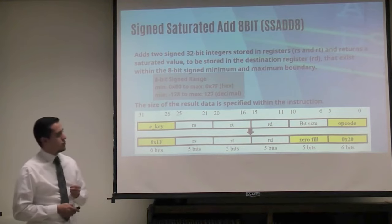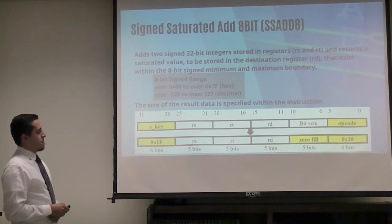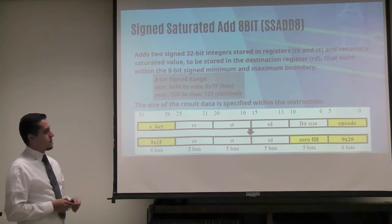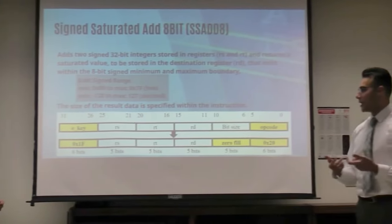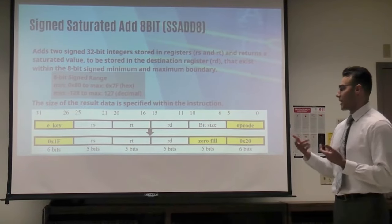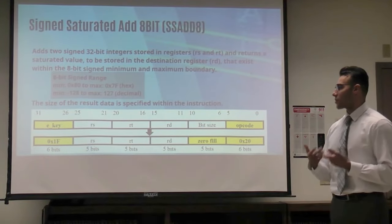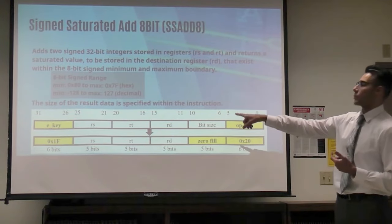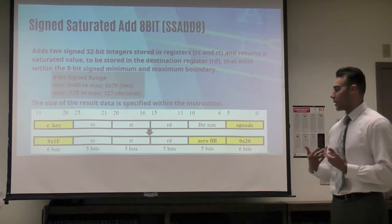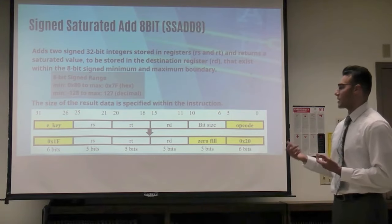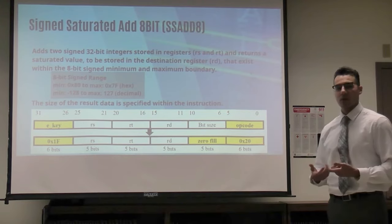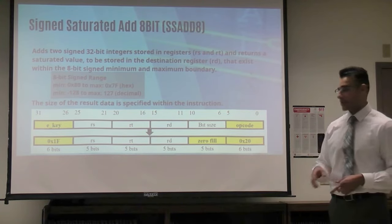This is our signed saturated add in bits. The user specifies the source registers RS and RT, and the processor then adds them. It compares the results with the range, negative 120 and 127. If it's between the range it will save the result back to the initial register; otherwise it will saturate it and send it back.